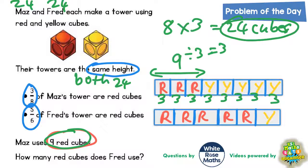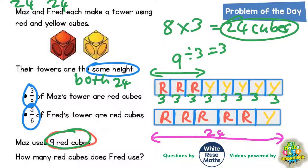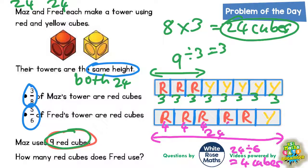So what we can do now is put an arrow spanning across Fred's tower and put a 24 there. But remember Fred's tower has only got six sections in the bar, so 24 divided by 6 equals 4 cubes in each section. So each section is worth 4.